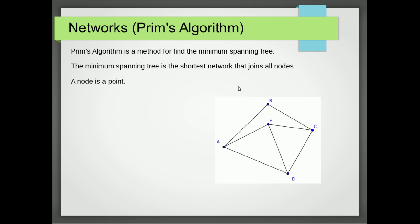A node is a point on the network, so in this case the points are A, B, C, D and E. And the network is the set of paths joining those points. So in this case the line here A, B is a path and A, E is a path and so on.